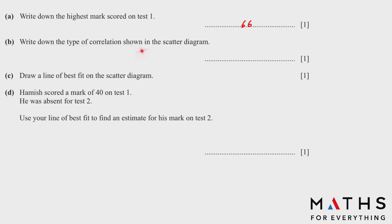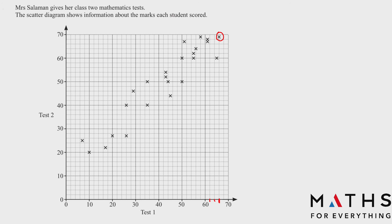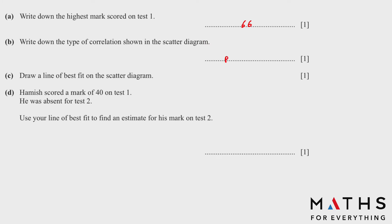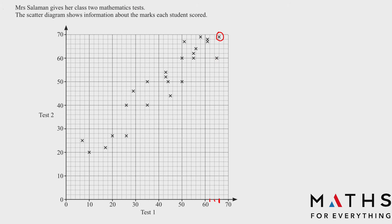Part b: write down the type of correlation shown in the scatter diagram. If the mark in Test 1 is increasing, the mark in Test 2 is also increasing. If the line is going upward like this, it's a positive correlation. Part c: draw a line of best fit on the scatter diagram. We try to make a line that has approximately the same number of crosses on both sides. This is the line of best fit.